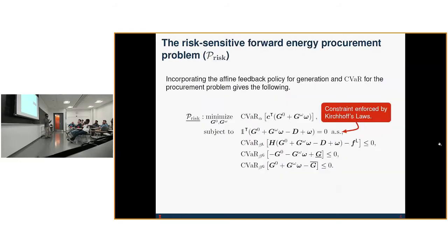So now returning back to our problem, applying our affine recourse policy and incorporating our conditional value at risk to our objective and constraints, we arrive at the following problem. Notice that we have one single almost sure constraint. This is because our power balance constraint must be met—it's physically enforced, so it doesn't really make sense to not be able to satisfy it. So because of that, we enforce it almost surely.